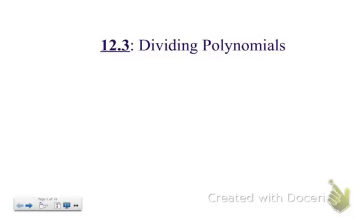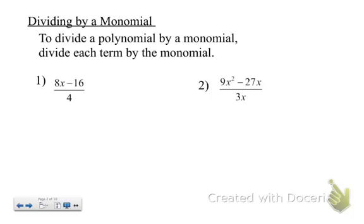This is section 12.3, Dividing Polynomials, and this is the simplification method, not long division. Okay, so when you're dividing by a monomial, remember that means one term, you're just going to divide each term by the monomial. So one way to think about it is to rewrite this as 8x divided by 4 minus 16 divided by 4.